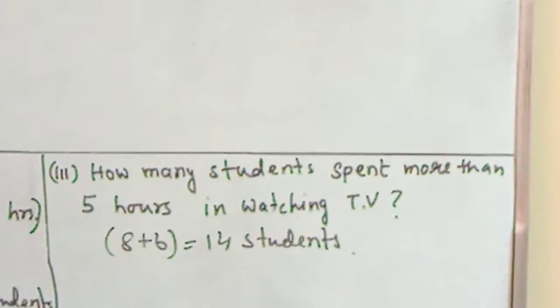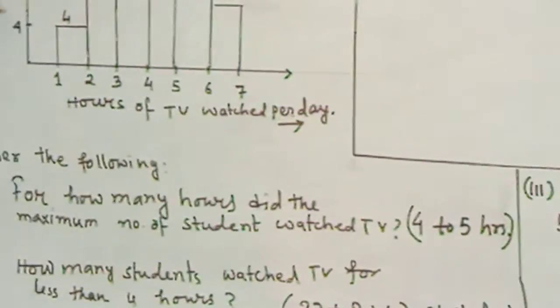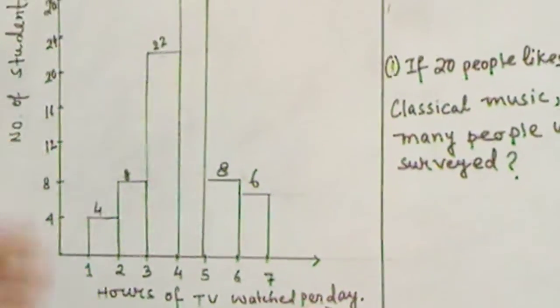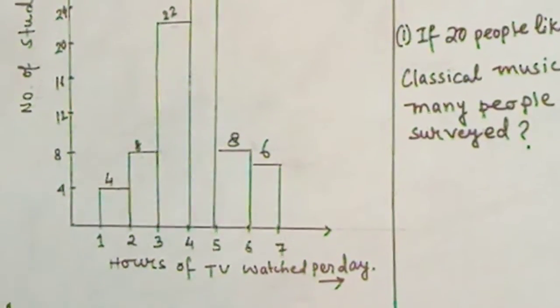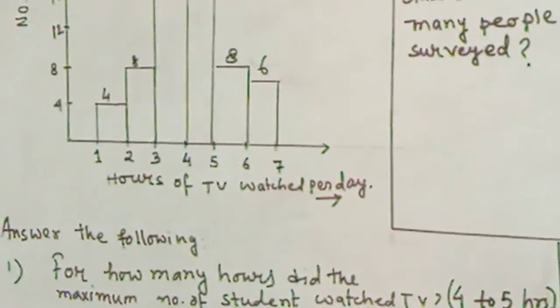Whenever you have to read the graph, you have to know the graph properly, what is indicated on the vertical line and what is indicated on the horizontal line, then read the question and give the answer properly.